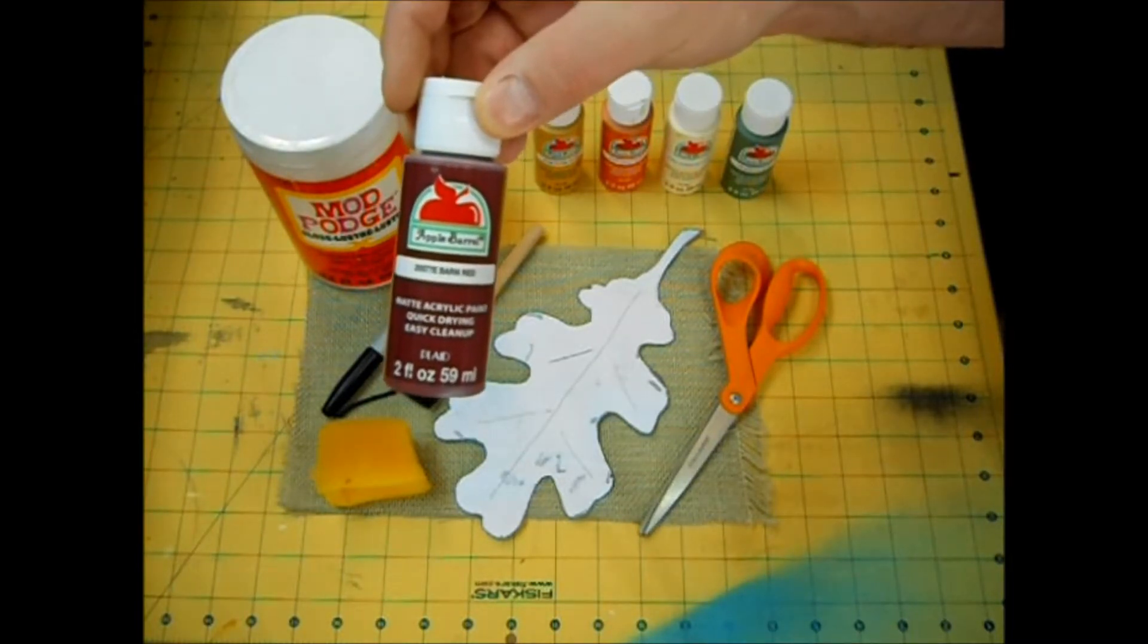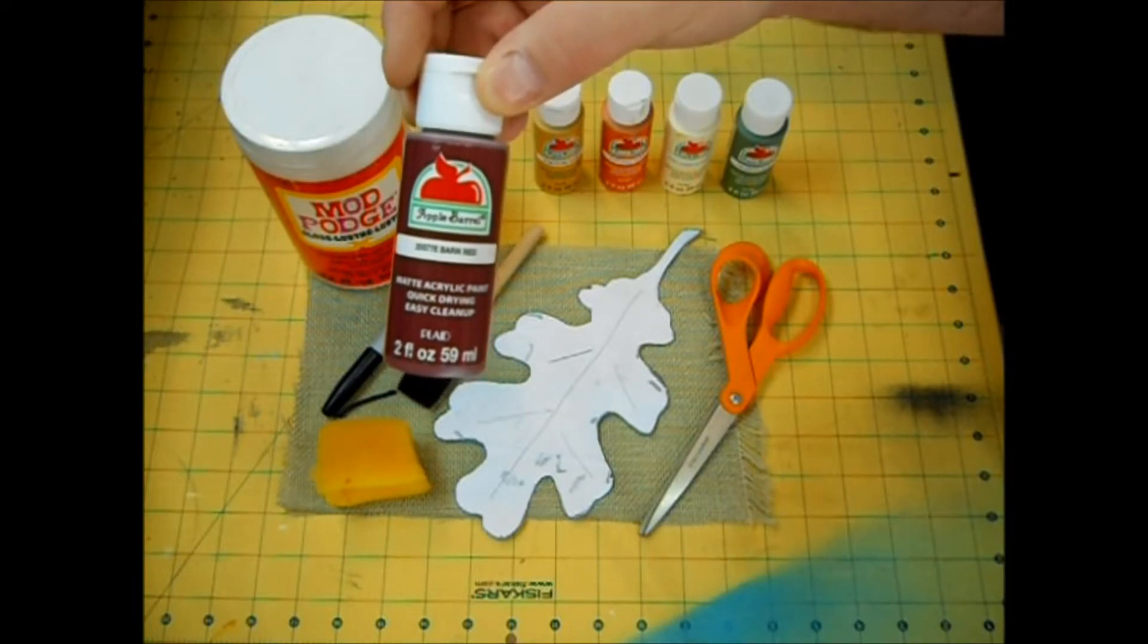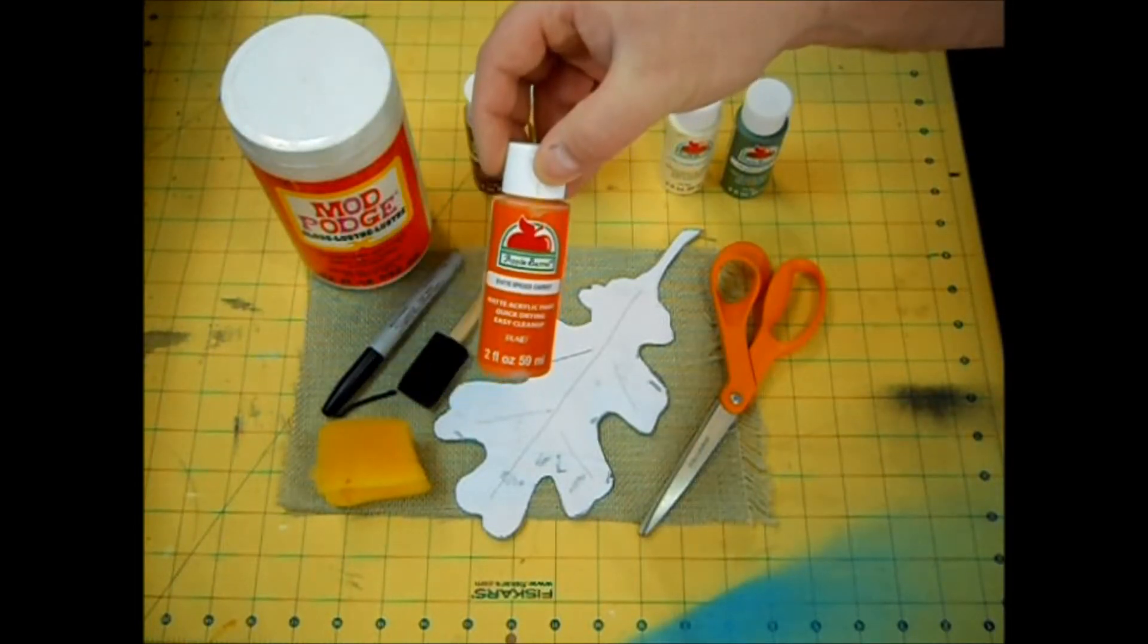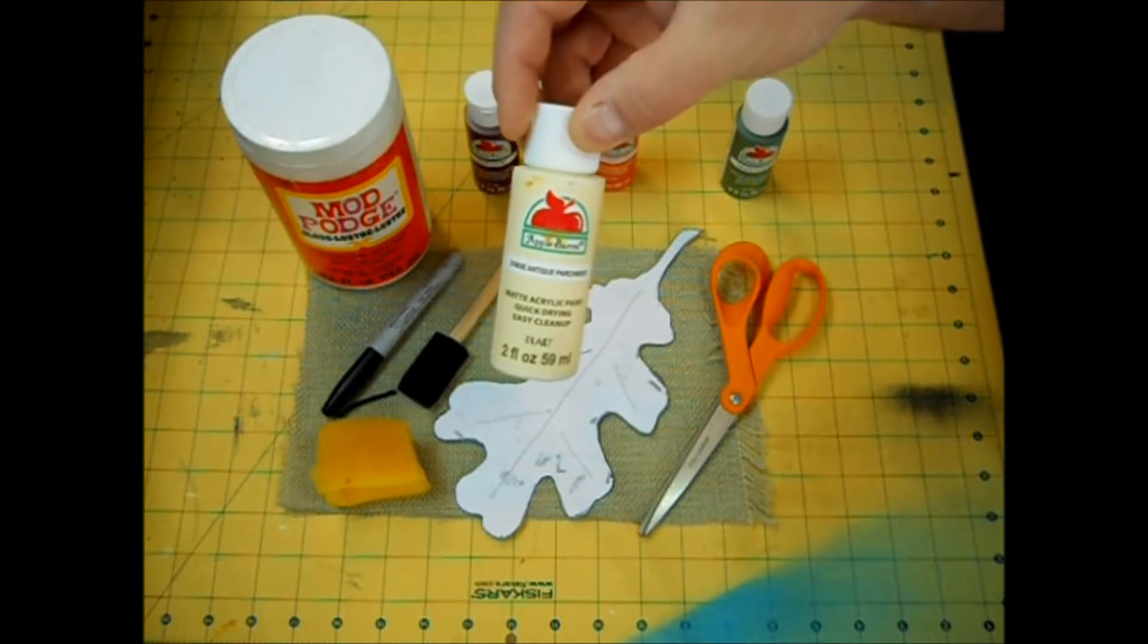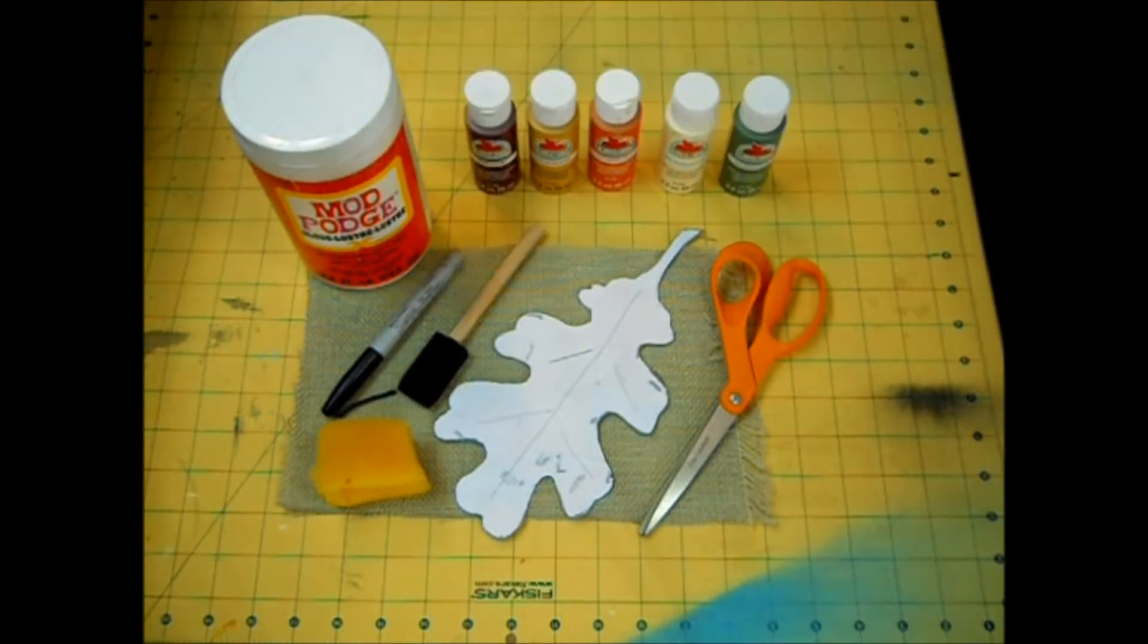Today I'll be using Barn Red, Golden Sunset, Spiced Carrot, Antique Parchment, and Marsh Green. Let's get started!